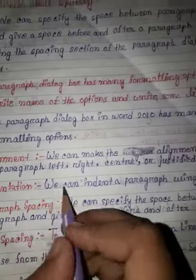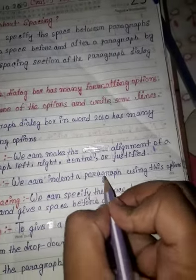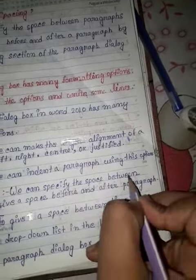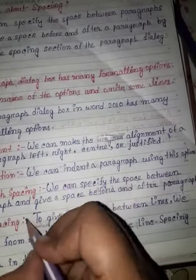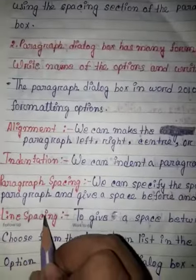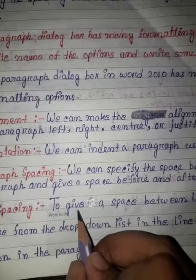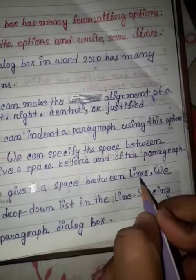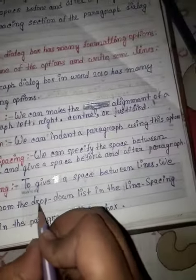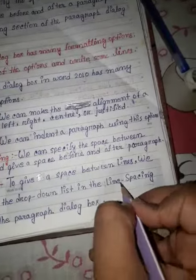Indentation: we can indent a paragraph using this option. Paragraph spacing: we can specify the space between paragraphs and give a space before and after a paragraph. Line spacing: to give a space between lines, we can choose from the drop-down list in the line spacing option.